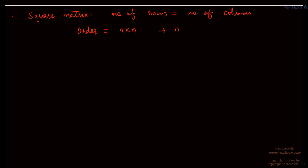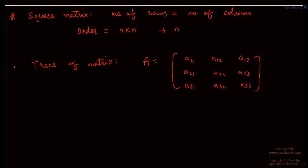For square matrices, we have a lot of different properties. The first property is known as the trace of a matrix. When you write a square matrix of order 3, this line is known as the principal diagonal. The sum of these diagonal elements is known as the trace of the matrix. Trace is written as trace of A, and trace of A is nothing but the summation of the elements in the principal diagonal — the summation of Aii.